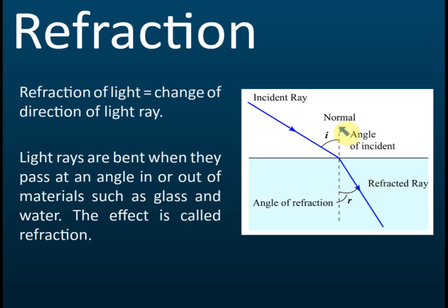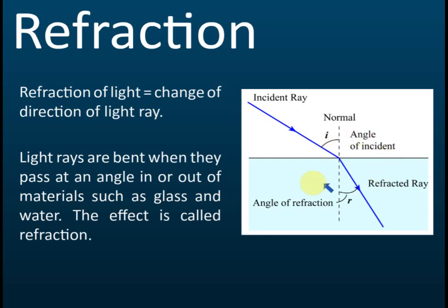If we draw a straight line perpendicular to this plane at the point of refraction, this line is called the normal. You need to know how to draw the normal because in an example they may ask you to draw the ray diagram. The angle between the incident ray and the normal is called the angle of incidence, and the angle between the refracted ray and the normal is called the angle of refraction, denoted by the symbol R.